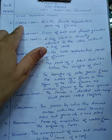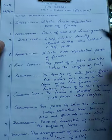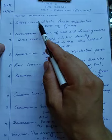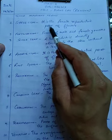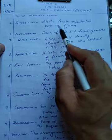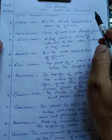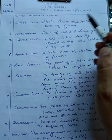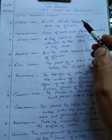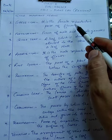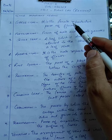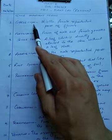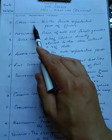The first term is gynoecium. This gynoecium is the female reproductive part of the flower. You all know that the flower is the reproductive part of the plant. In the flower there is a male part as well as a female part, and this gynoecium is the female part of the flower.